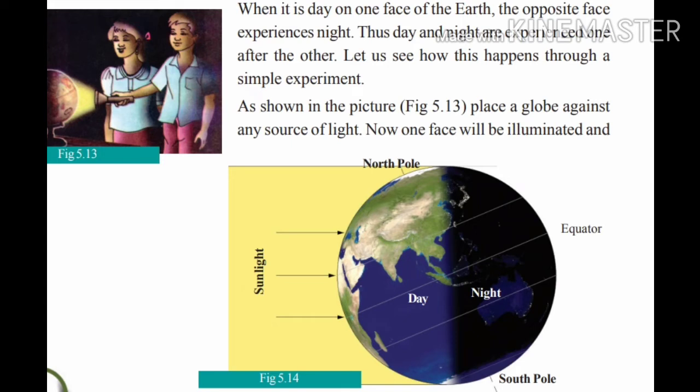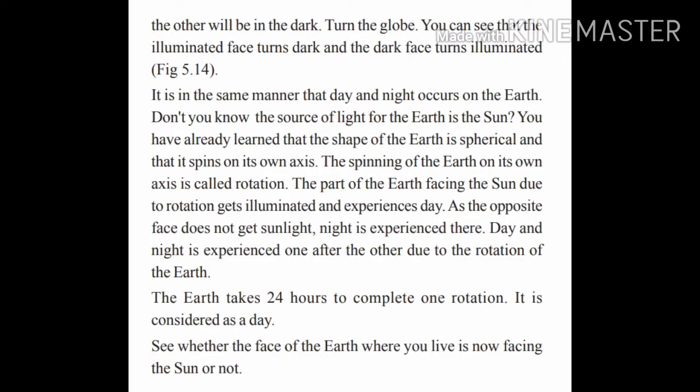Why do we experience day and night? We have already learned about earth's axis. Axis is an imaginary line on which the earth rotates. The movement of the earth on its own axis is called rotation. When the earth rotates on its own axis, the part of the earth facing towards the sun will be illuminated — that part gets light and experiences day. The other part which is away from the sun experiences night.